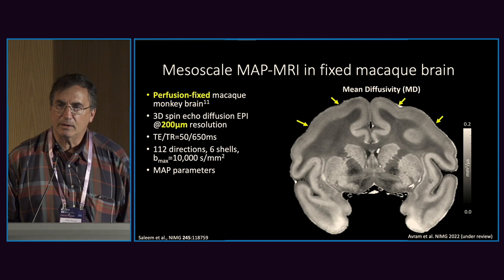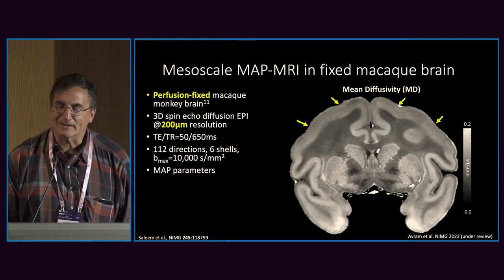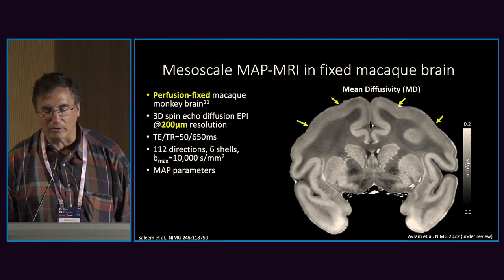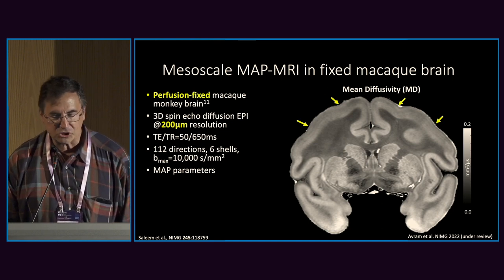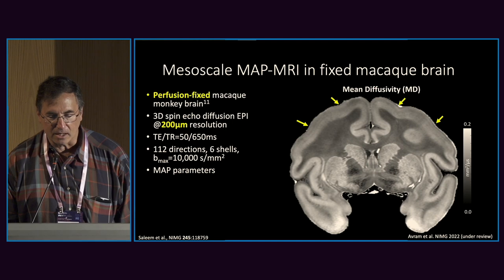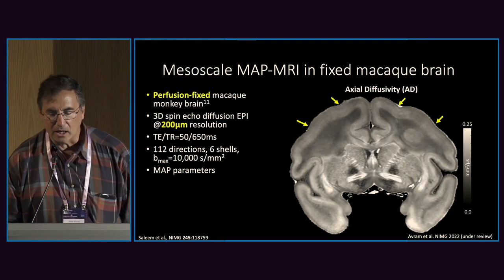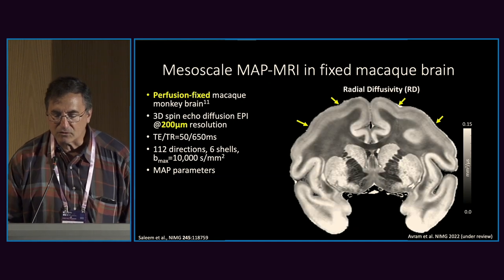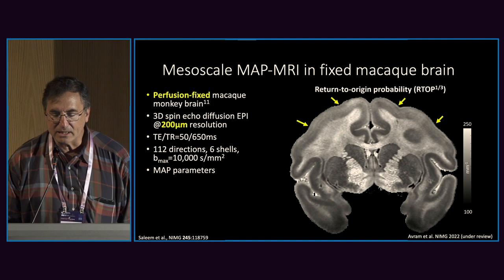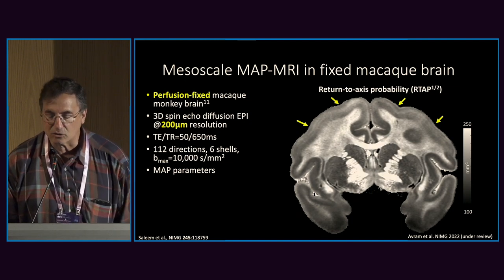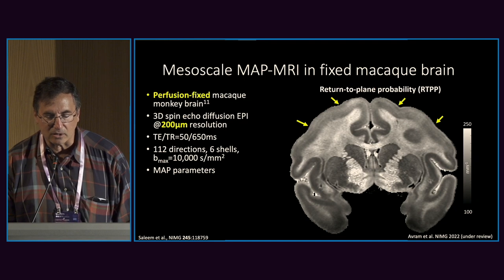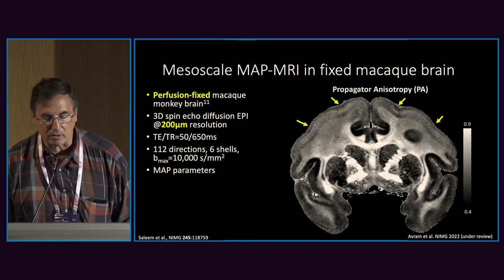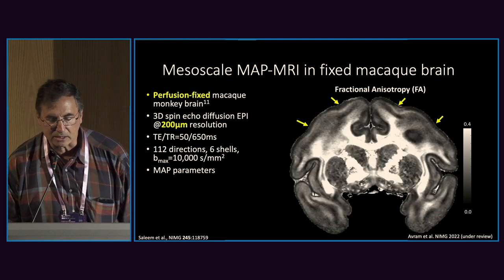One of the things my lab is involved in is trying to get some of this information — not over many months and from dead tissue — but to do this in vivo in about an hour. There are some features we can recapitulate using diffusion imaging methods. I'll tab through and you can start to see different diffusion-derived stains that show different features, including layered structures at the cortical areas that recapitulate some of the layers seen in these high-resolution neuroanatomical structures that the Lichtman lab produces.